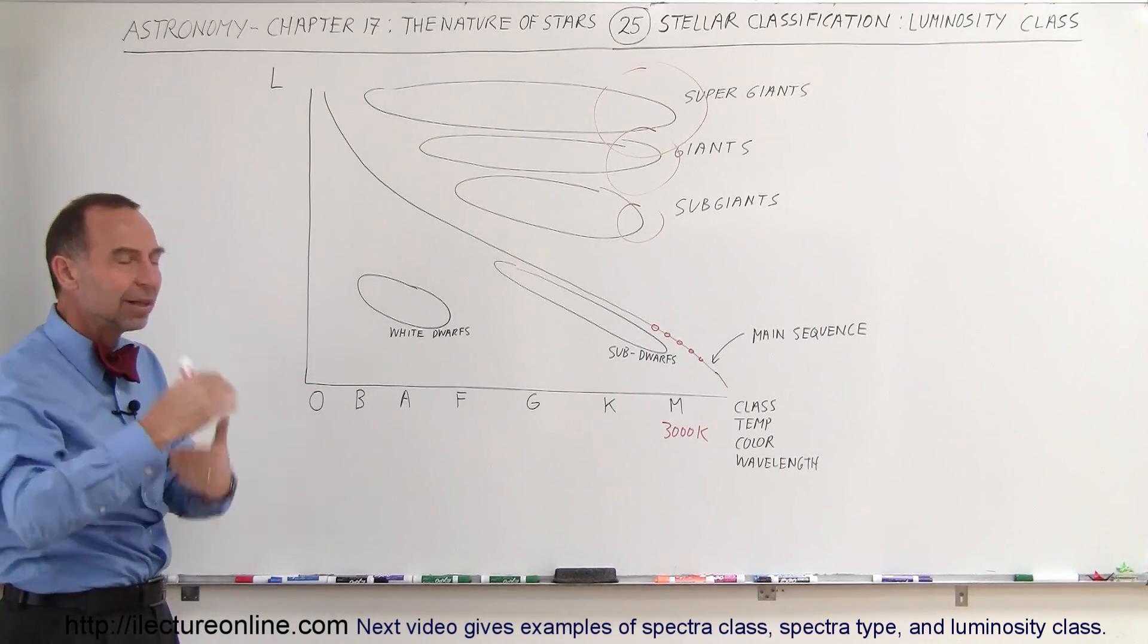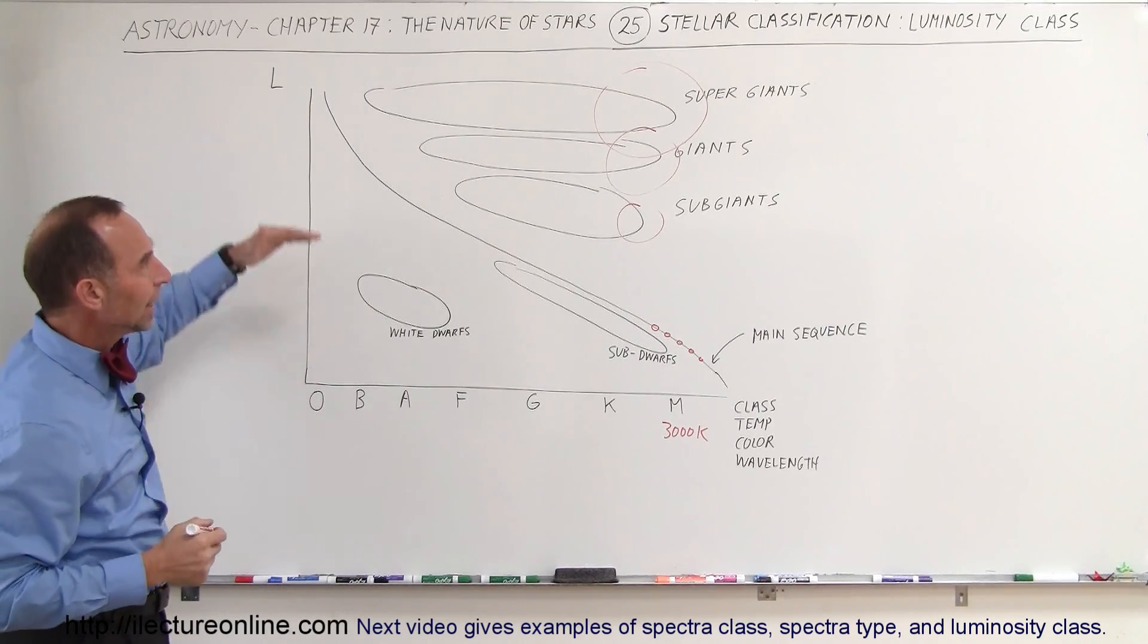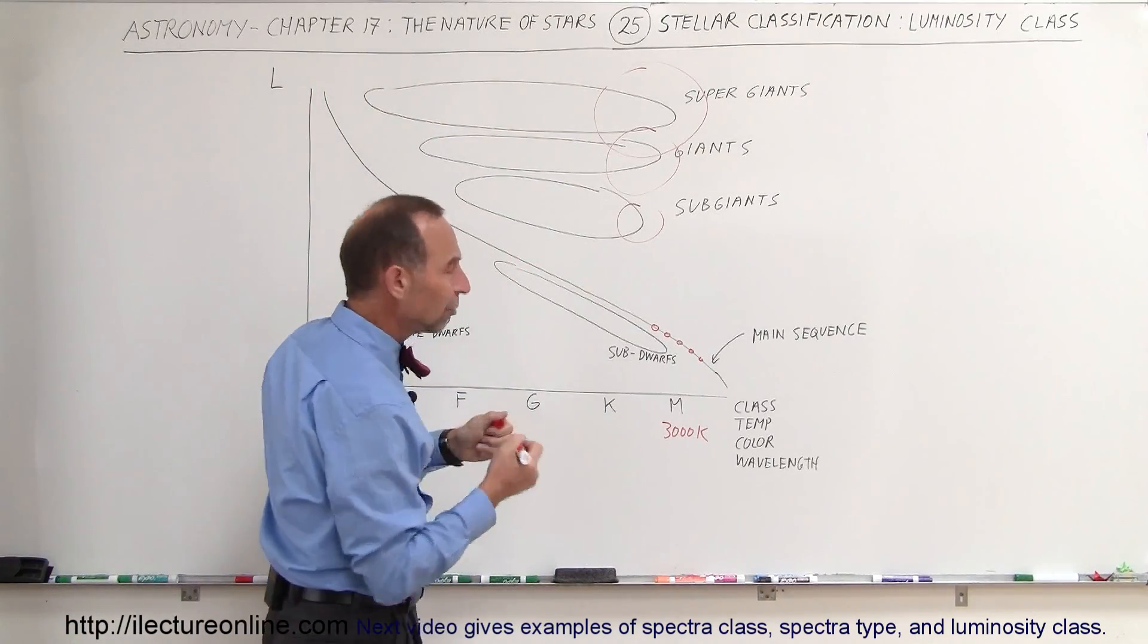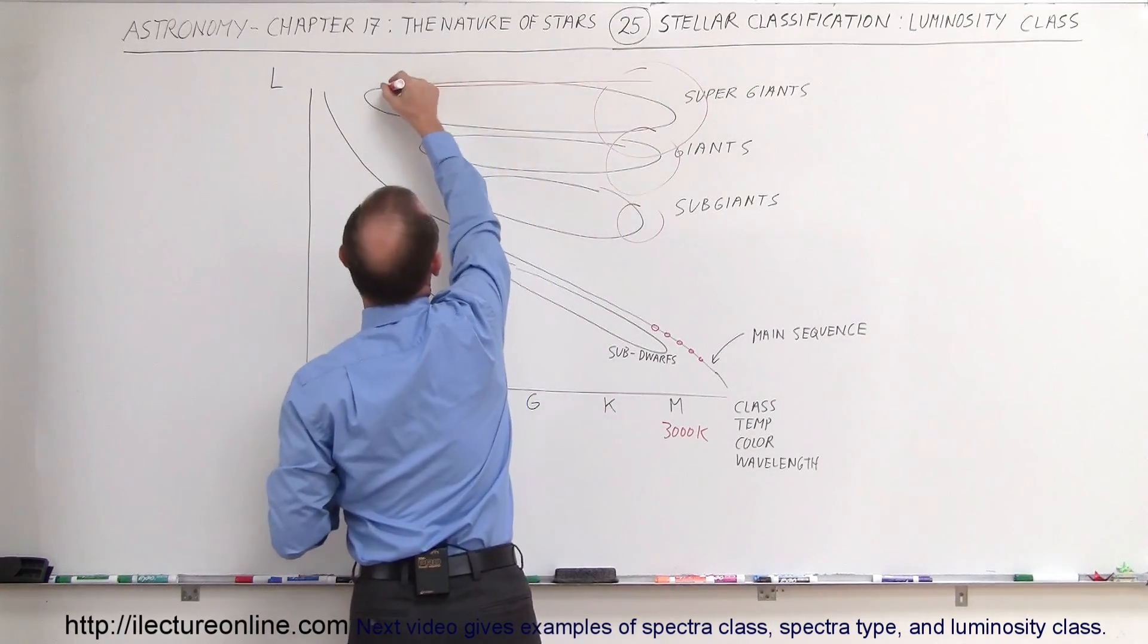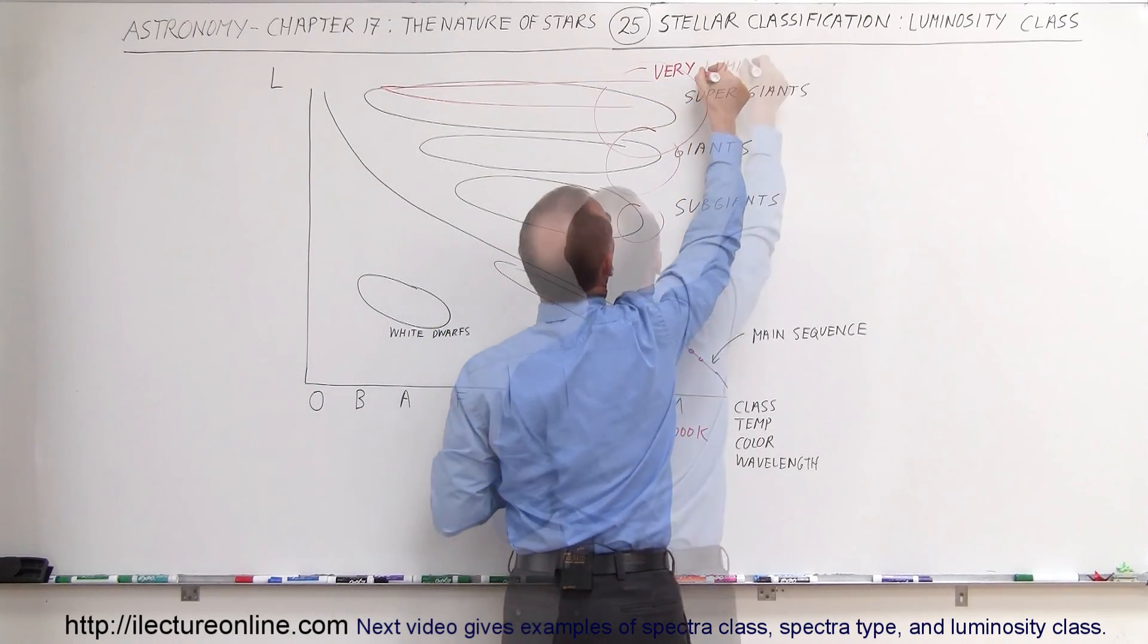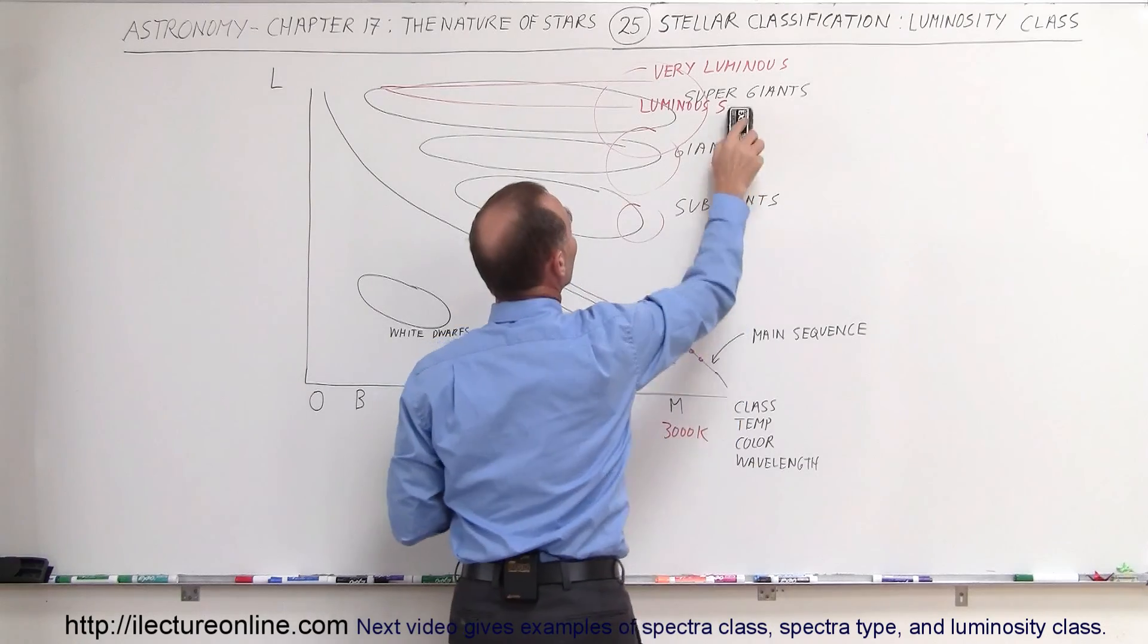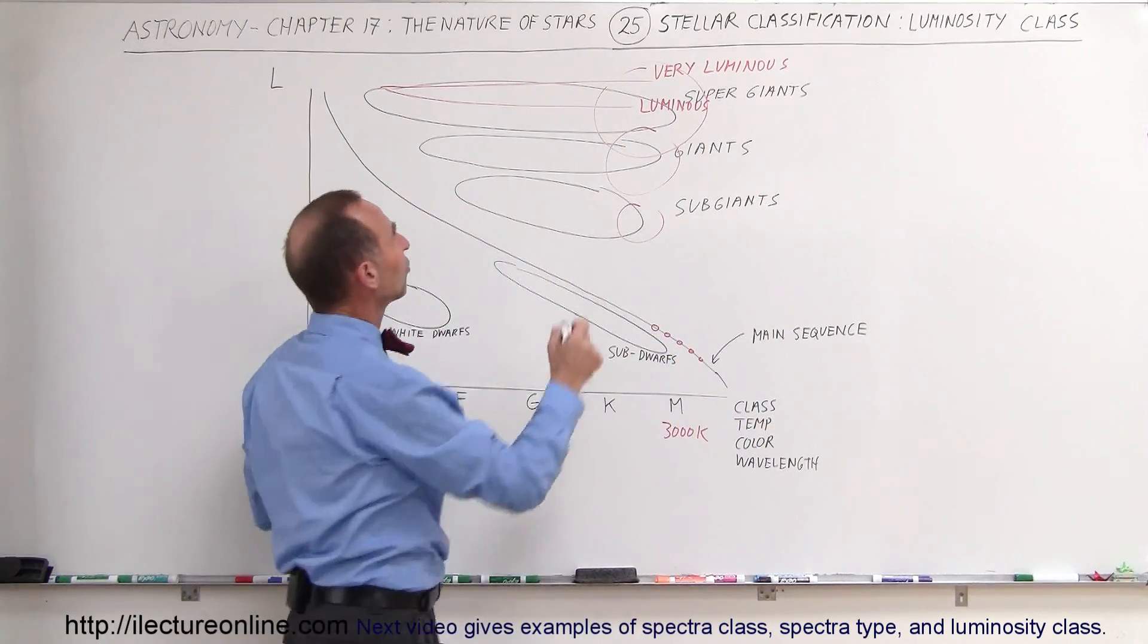We began to realize that we could actually do that. We could subclassify them, and so we came up with what we called the luminosity class. In the supergiants, and of course they range in color all the way from blue to red, we had two subdivisions. We called them the very luminous supergiants and then we had the luminous supergiants, and we called those luminosity class Ia and Ib.